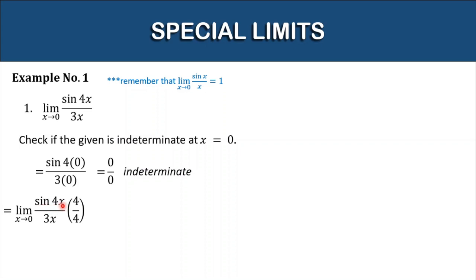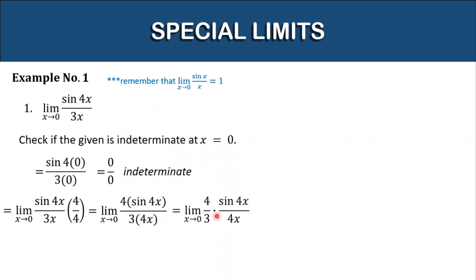Multiplying gives 4 times sine 4x in the numerator, and in the denominator we can write it as 3 times 4x. We now have the same 4x in numerator and denominator. Separating: the limit of 4/3 times sine 4x over 4x as x approaches 0. Evaluating, sine 4x over 4x equals 1, so our answer is 4/3.